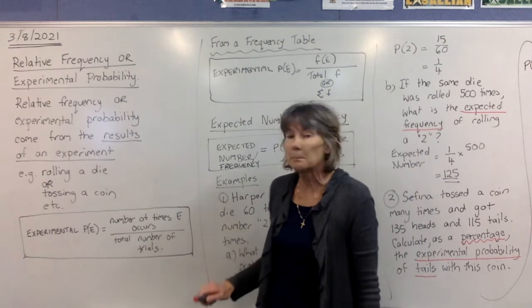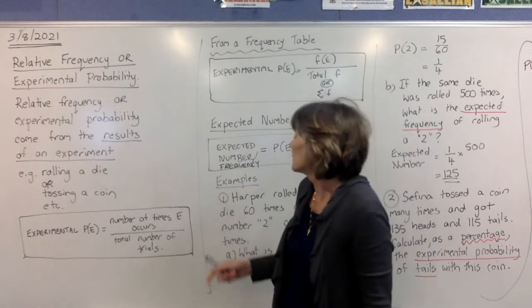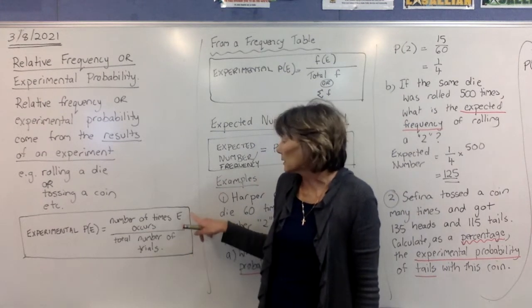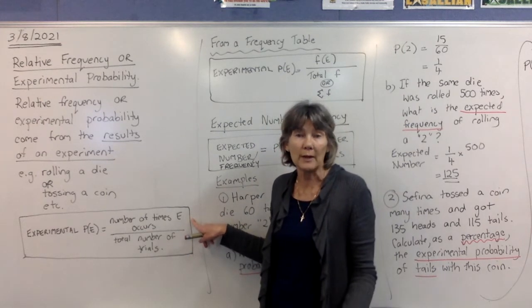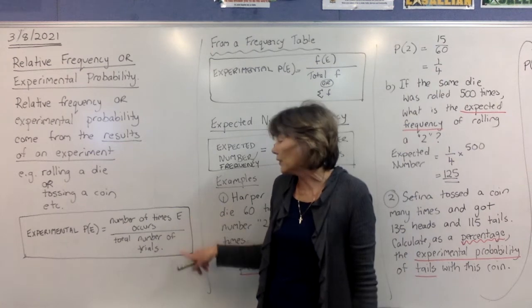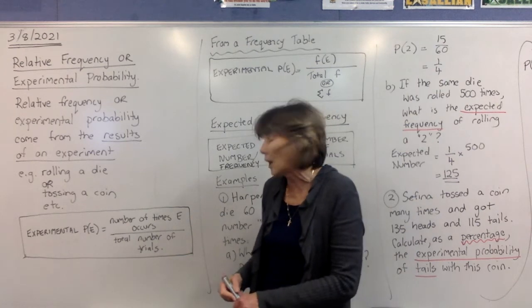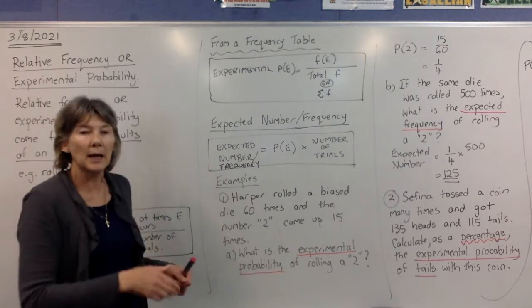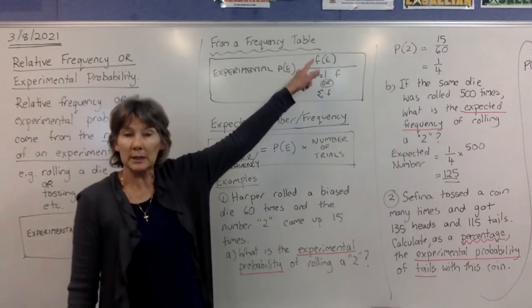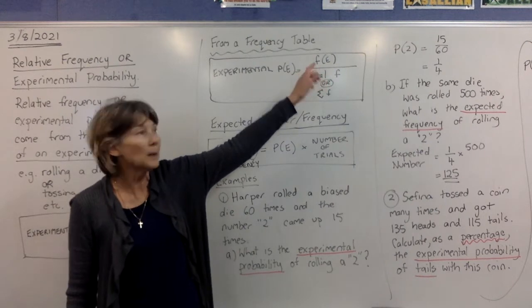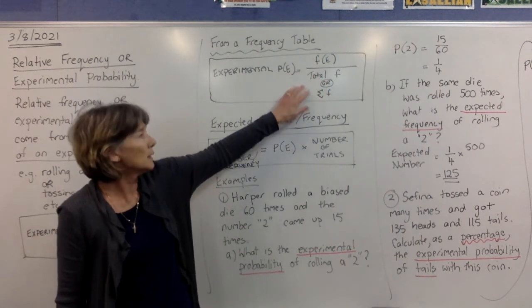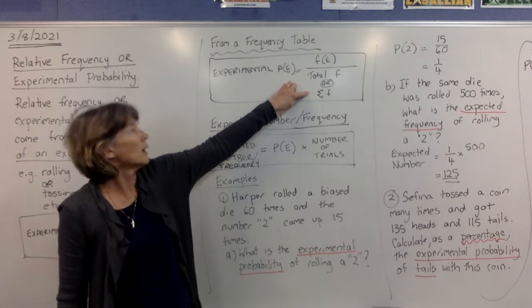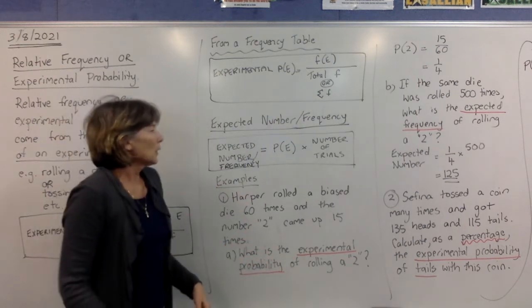So experimental probability, or relative frequency, is a fraction, because all probabilities are fractions. So it's the number of times that the actual event in the question occurs over the total number of time trials in the experiment. If we're looking at a frequency table, that means we want the frequency of whatever they're talking about on the top, and the total frequency, which is sometimes written like this, sigma f, on the bottom of the fraction.